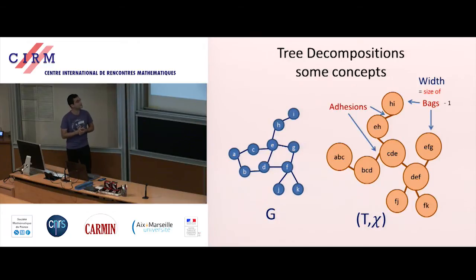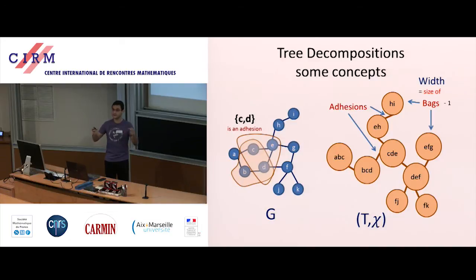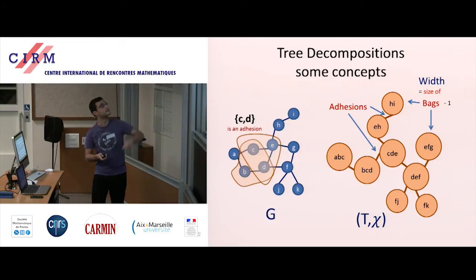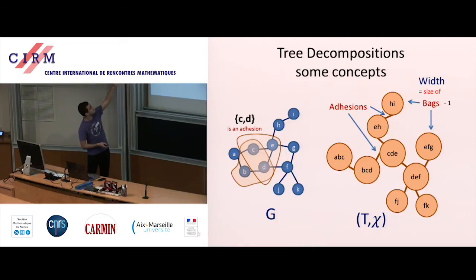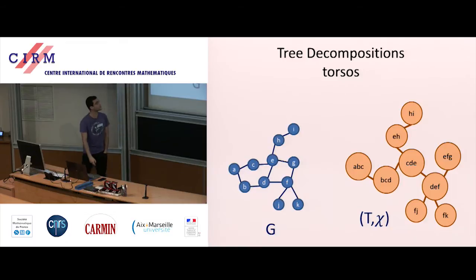The adhesions of a tree decomposition are defined as follows: you look at an edge of the tree decomposition, take the two bags that are the endpoints of that edge, and take their intersection. For example, the intersection of BCD and CDE gives CD, which is an adhesion. Each edge of the tree defines one adhesion. The reason they're called adhesions is that you can see that the piece ABCD and the rest are glued together at CD. For every bag of the tree decomposition there is also a torso: you take the graph G induced by the vertex set in the bag, but then you make all of the adhesions of that bag into cliques.